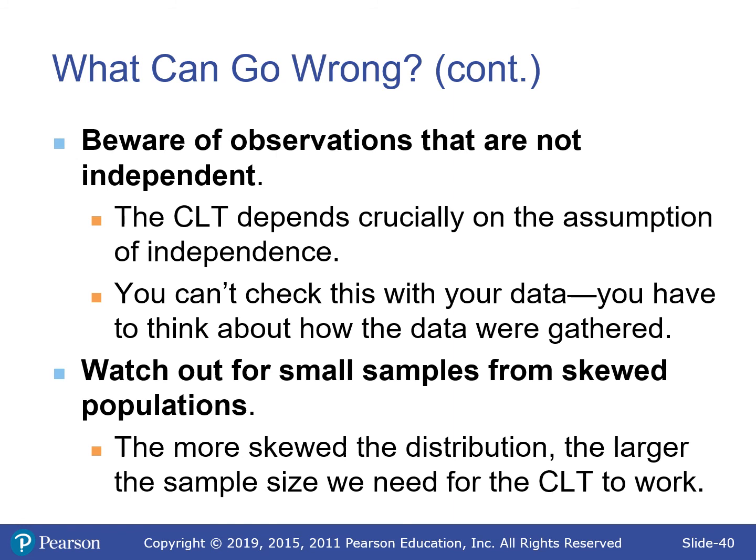Beware of observations that are not independent. Independence and randomness are going to be conditions on everything we do this entire year. You generally can't check it from the data — you have to think about how the data were gathered. Sometimes the problem will tell you outright. Also watch out for small samples from skewed populations: if the sample size is small, the CLT approximation may not be good enough. But remember, even with a skewed population, a sample size of 20 is generally sufficient.